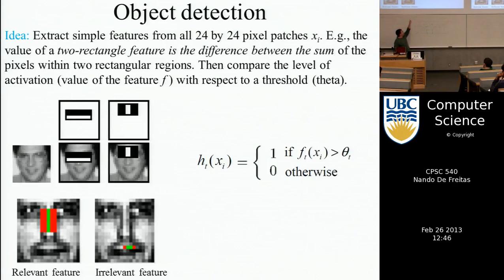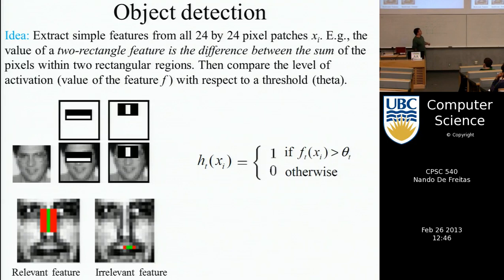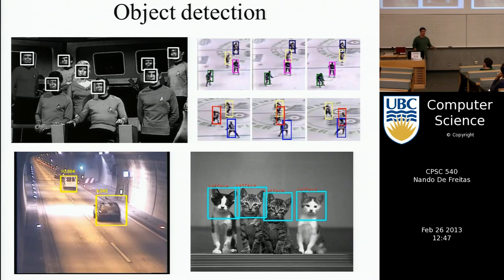The equation there: H is this feature you've chosen — this particular rectangle F — and you look at the difference, thresholding the difference between these two particular regions of the image. You can use this for face detection, you can detect cats, cars, pedestrians — very useful for things like Google's self-driving car, where it needs to identify other cars on the road to avoid hitting them.